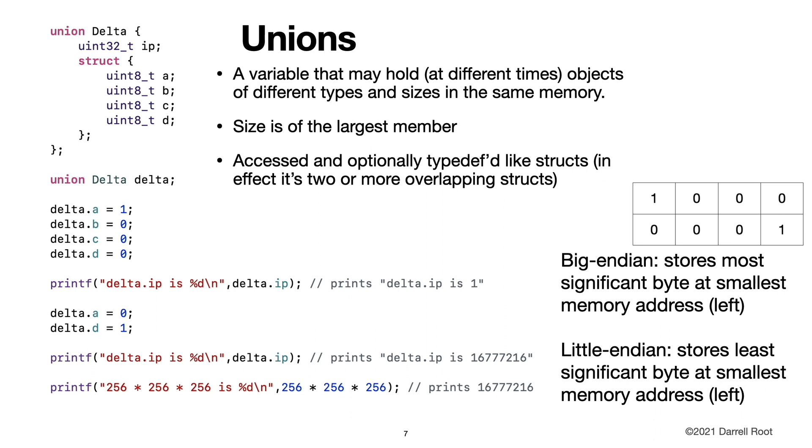There are older microprocessors, Motorola microprocessors, PowerPC microprocessors, there's a whole bunch of microprocessors from history that were big Endian. One problem that we're going to run into later in networking is when we're encoding integers and putting them on the network, we need to decide whether to put the most significant byte or the least significant byte at the smallest memory address or transmit it first.